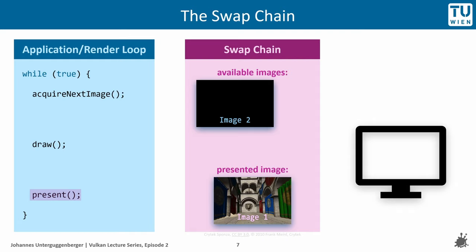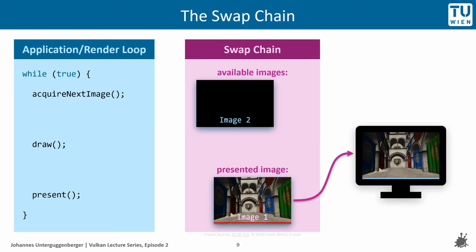The SwapChain has received the instruction to present that image, and it will start to transfer the image to the computer monitor. This typically happens in an ordered way, namely vertically. This pattern is reflected in the technical data of monitors, which usually state a much faster horizontal update frequency — usually in the range of kHz — than for the vertical update frequency, typically in the range of Hz.